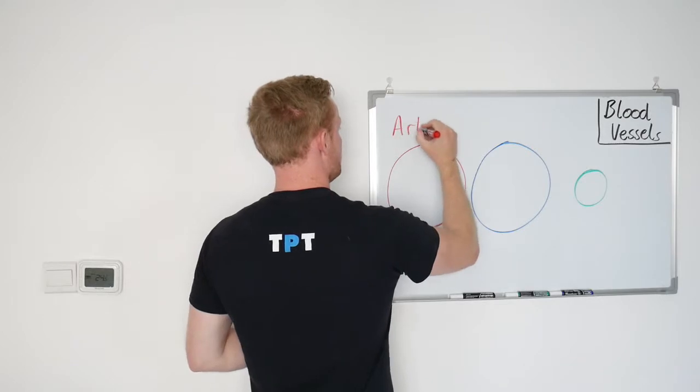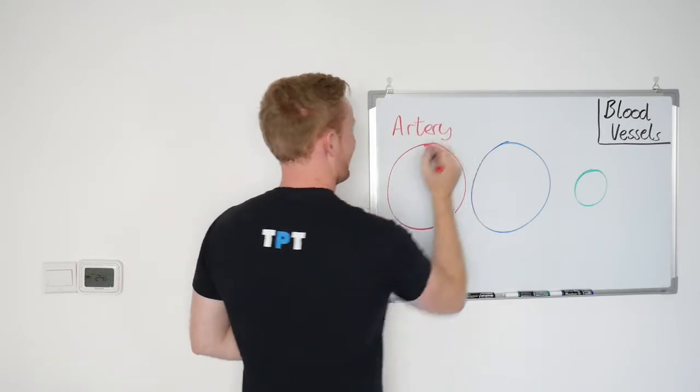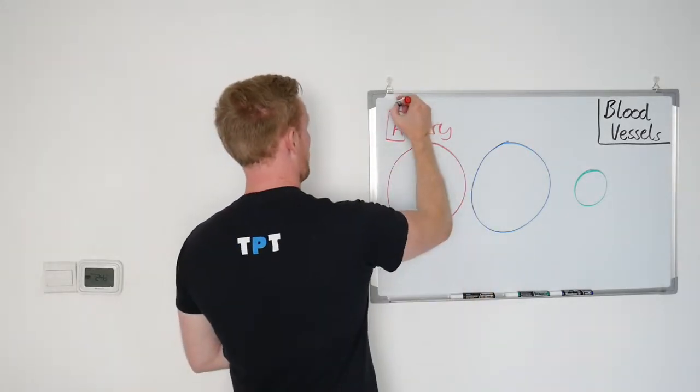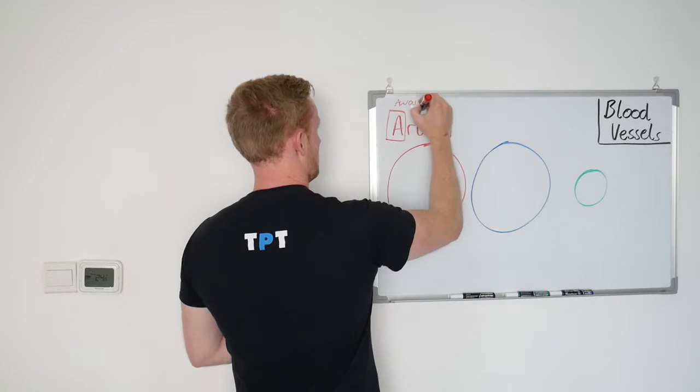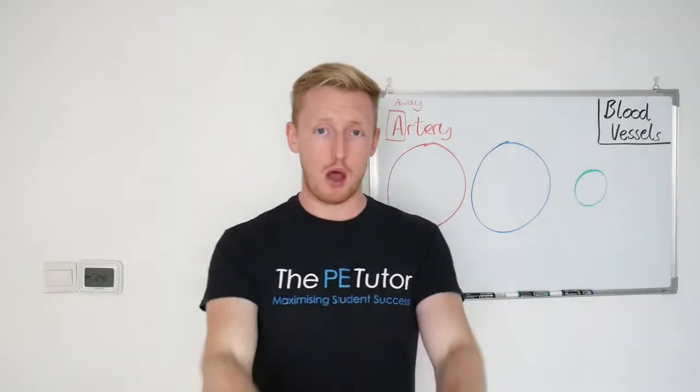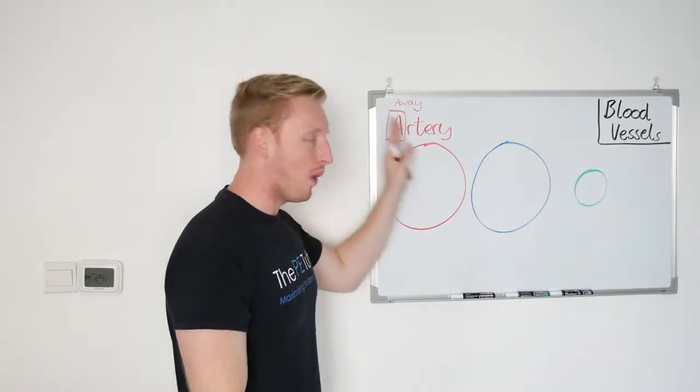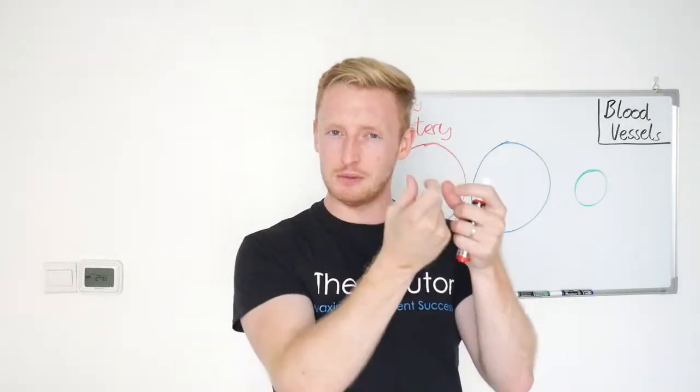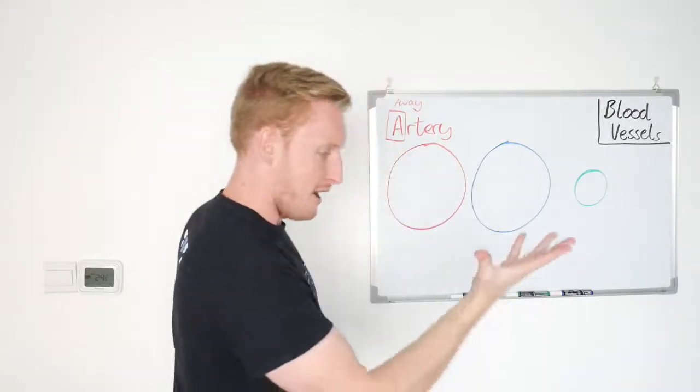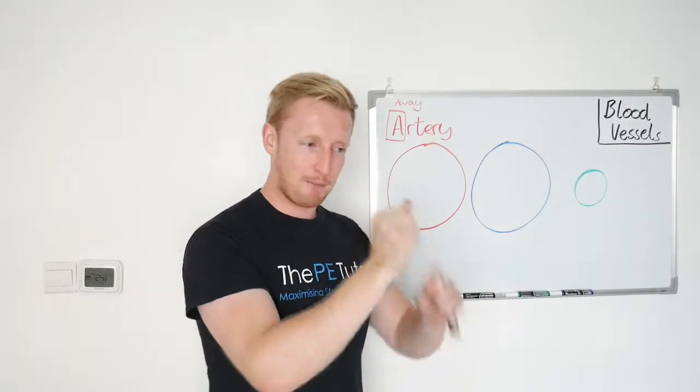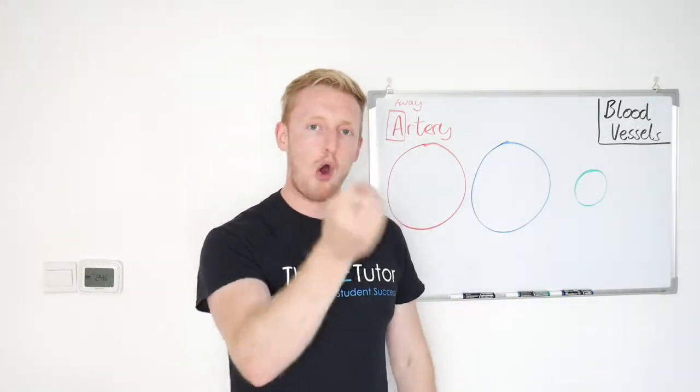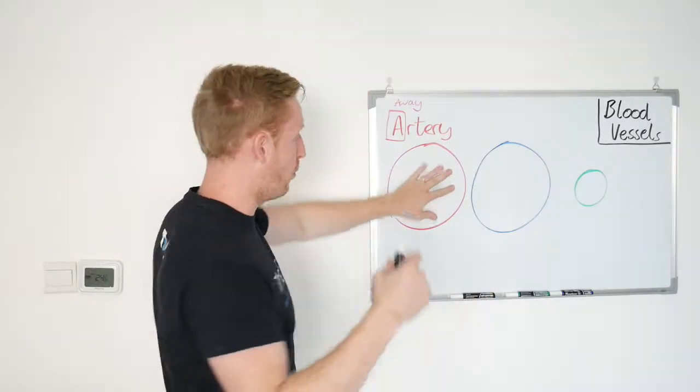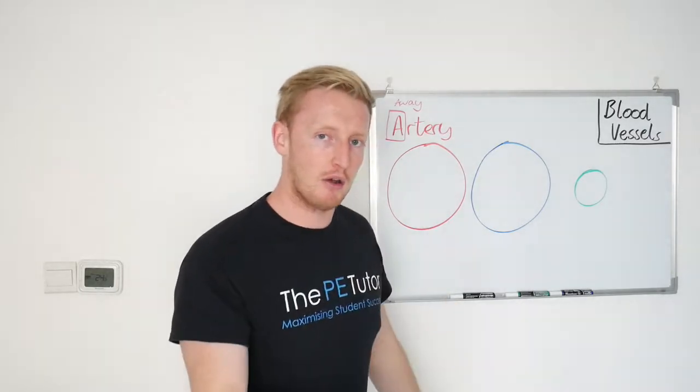To start with we are going to look at the artery. The first thing I'm going to say is look at what it starts with. It's an A. A for away. Arteries carry blood away from the heart. What that means is it gives us an indication of what it's going to be built like because it's always carrying blood away from the heart. If the heart's just pumped and contracted, blood's just been forced out of it, it's going to be travelling at high pressure, at high speed.